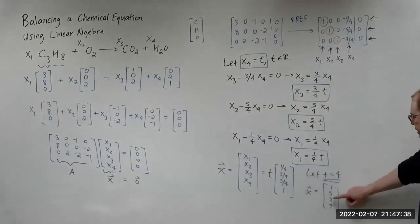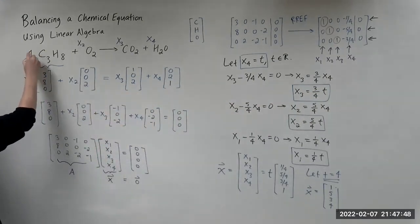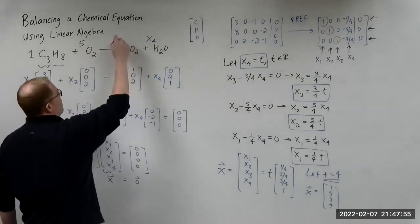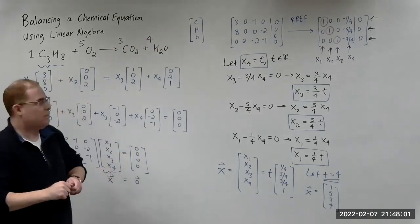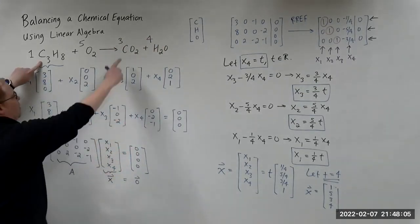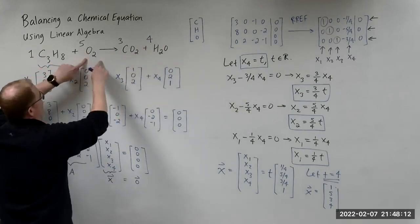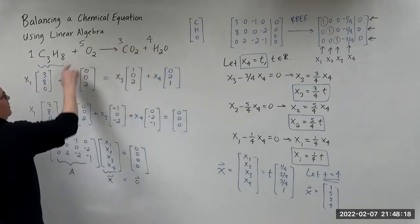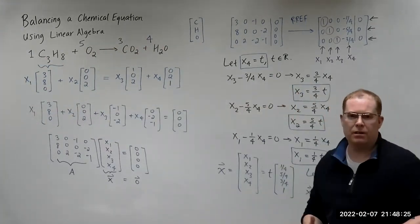So let's check: X1 = 1, X2 = 5, X3 = 3, X4 = 4. We have three carbons on the left, three carbons on the right — that's good. Eight hydrogens on the left, eight hydrogens on the right. And 10 oxygens: we have six oxygens from CO2 plus four oxygens from water, giving us 10. Everything lines up — everything works out.